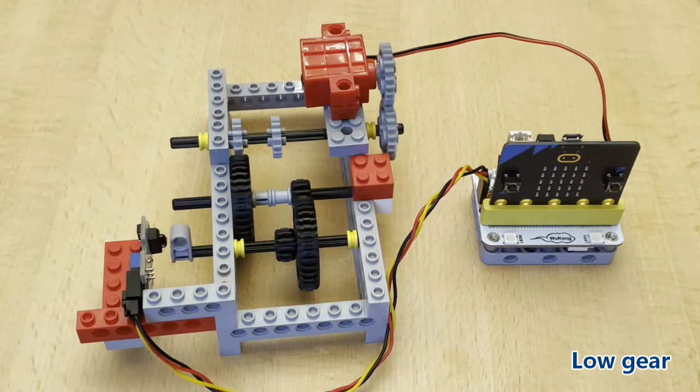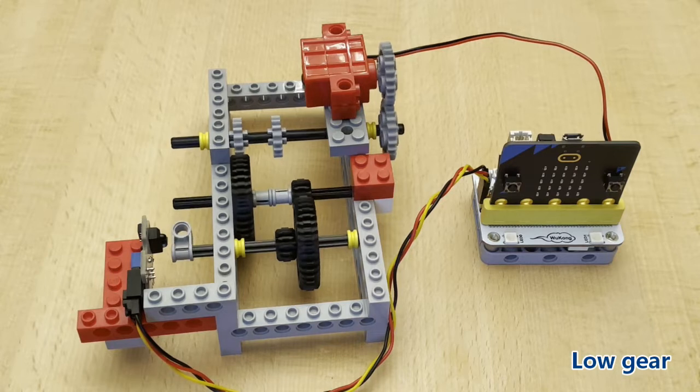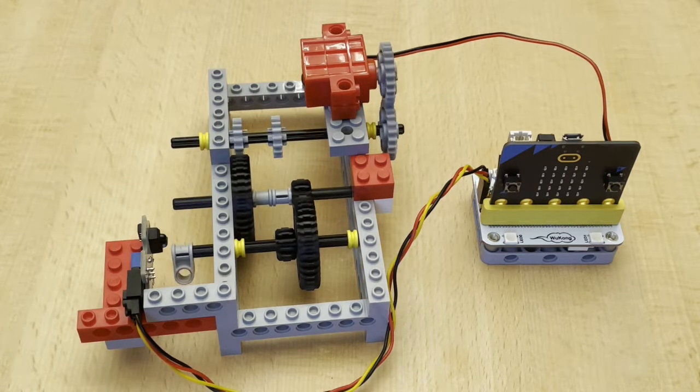With a low gear we get 6 turns in 30 seconds. In this and the following experiments I have shortened the video.